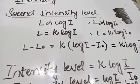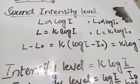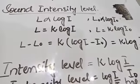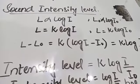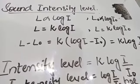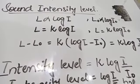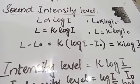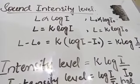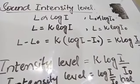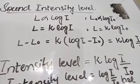The human ear responds to intensities ranging from 10 raised to the power minus 12 watt per meter square to more than 1 watt per meter square. 1 watt per meter square is a loud enough sound which is painful for our ears to listen to. Because the range is so wide, intensities are scaled by a factor of 10.